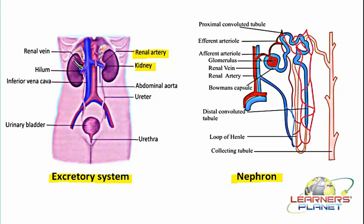The Bowman's capsule is towards the outer side of the kidney — in the cortex region, meaning the outer layer. In the middle, the tubules are present, and further the collecting tubules are present, which are connected with the ureters to pass the urine formed inside the nephron. An important quality of the nephron is that it has a semi-permeable or selectively permeable membrane, and the thickness of this membrane is not uniform.